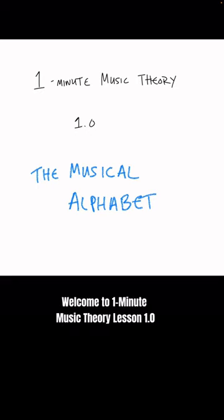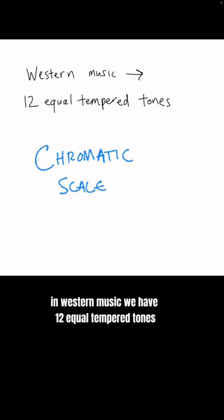Welcome to One Minute Music Theory Lesson 1.0. In Western music, we have 12 equal tempered tones known as the chromatic scale. These dots represent the chromatic scale and it repeats at the green dot.